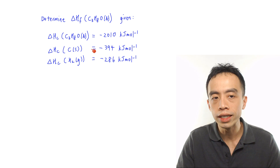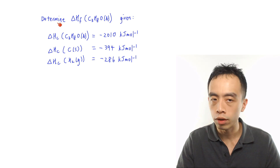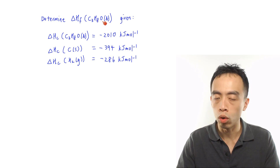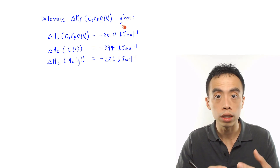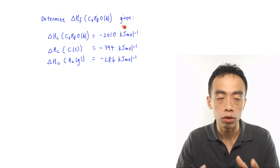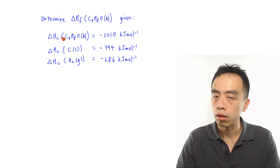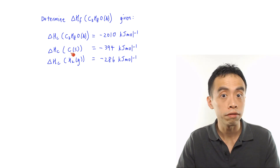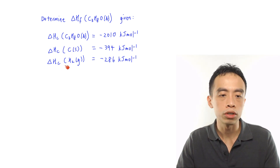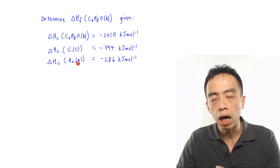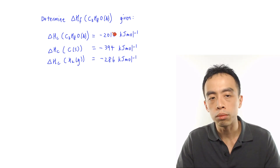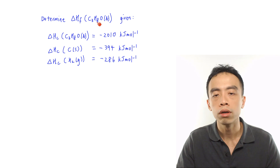Let's look at this example here. If I want to determine the enthalpy change of formation of propanol — the molecular formula is given as C3H8O — given the following enthalpy change of combustion terms: enthalpy change of combustion of propanol, of graphite carbon, and of hydrogen. So how will we draw an energy cycle to solve for the enthalpy change of formation of propanol?